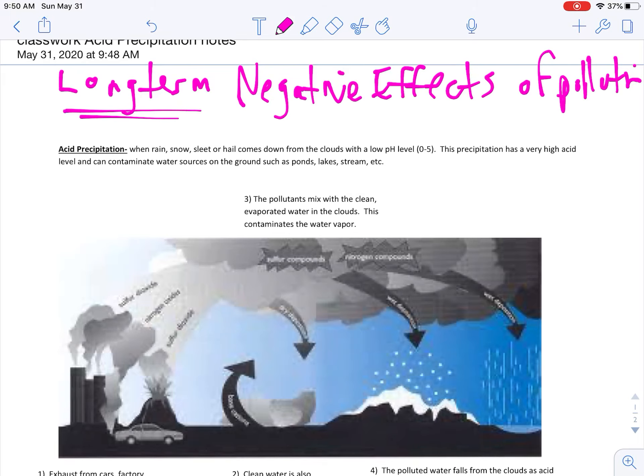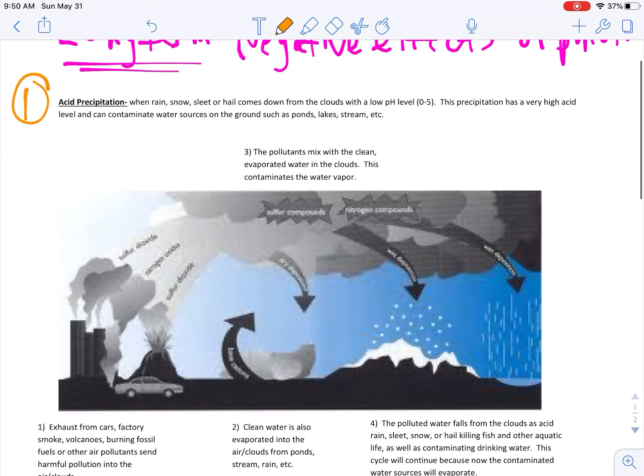One of those is acid rain. So most of you guys have heard about acid rain. It's actually acid precipitation, I should say, because it's not only rain but rain, snow, sleet, or hail. Why is this rain, snow, sleet, or hail so important? Well, it comes down from the clouds with a low pH level of zero to five. If it has a low pH level of zero to five, then this precipitation is very high in acid level.